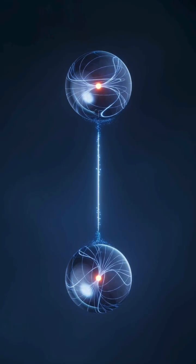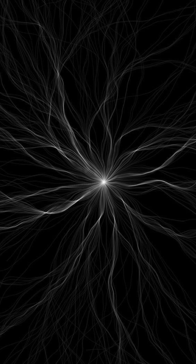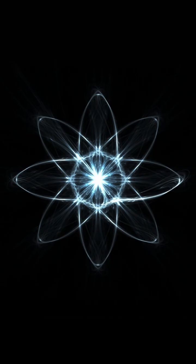2. Entanglement. When two particles are entangled, changing one instantly affects the other, even from across the universe. This links qubits together in ways classical bits can't match.